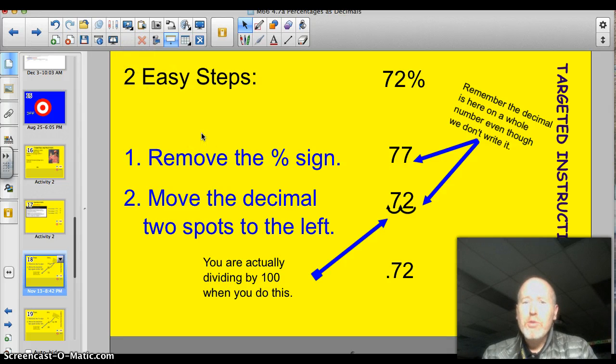Alright, basically, there's two easy steps. Let's take a look at 72%. Step number one, remove the percent sign. Now, you just got 72. Step number two is you move the decimal two spots to the left. Two spots. Now, what you're actually doing here is dividing by 100 when you do this.